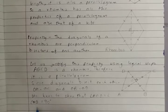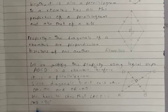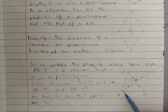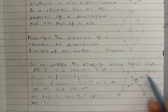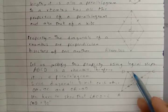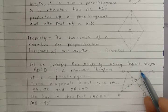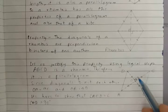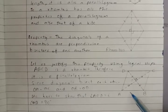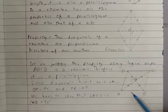By the side-side-side congruency criteria, triangle AOD is congruent to triangle COD, because this side is equal to this side. SSS means side-side-side.